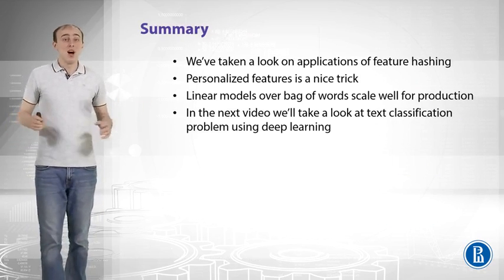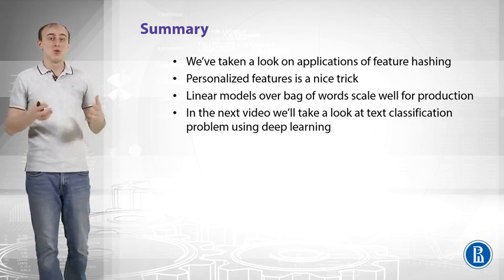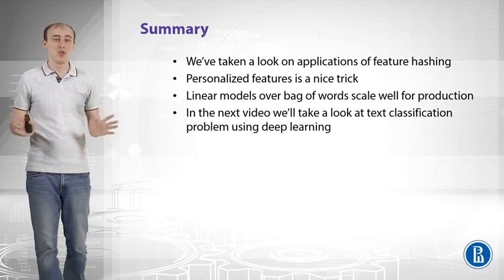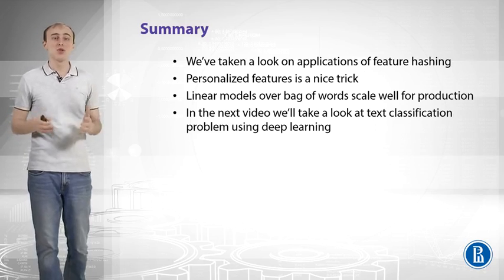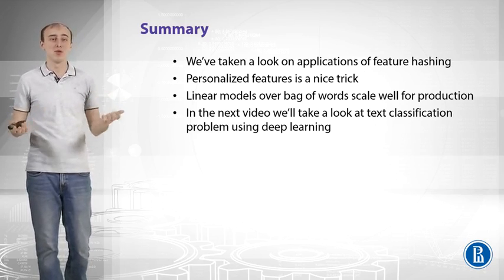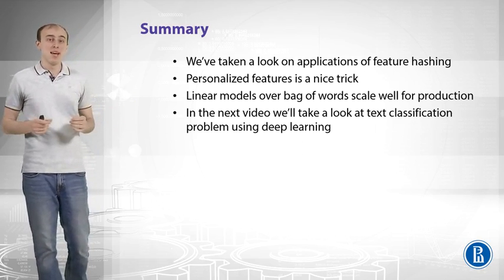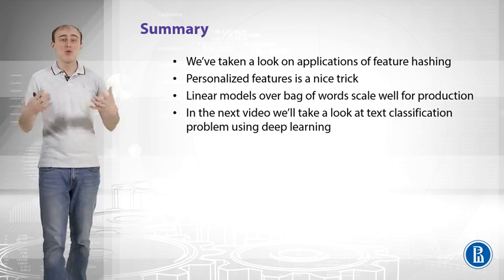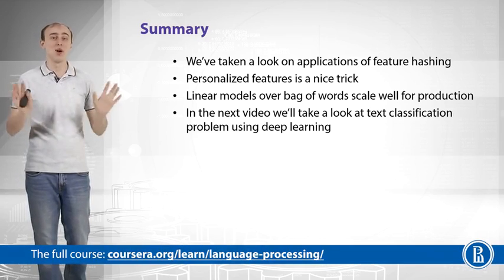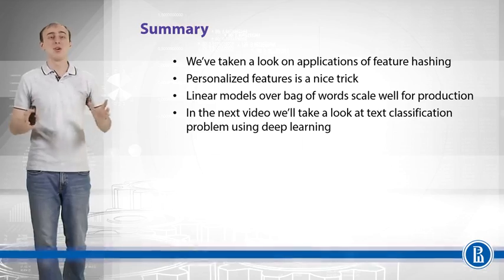To summarize: we looked at spam filtering as an application that uses feature hashing. Thanks to hashing, you can handle a huge number of features — even trillions — and you can add personalized features to further boost model performance. Linear models with bag-of-words scale well for production, which is why we covered them — you will most likely need to implement a linear model as a baseline in industry. In the next video we will look at text classification using deep learning techniques.